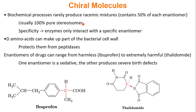In nature, we do have some D amino acids. For the most part, they make up the bacterial cell wall, and the reason for that is it protects bacteria from peptidases. A peptidase is an enzyme that cuts amino acids. Since 99.9% of amino acids are L, if a bacterium has D amino acids in its cell wall, peptidase won't work on those because it is looking to cut L amino acids.